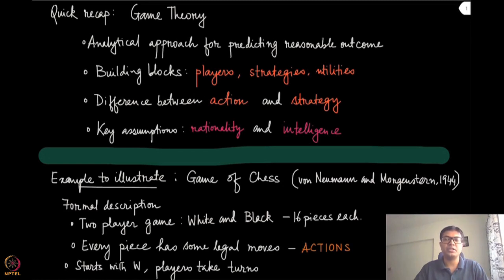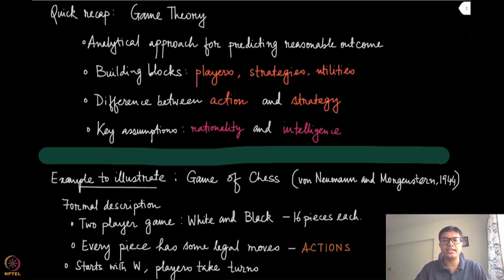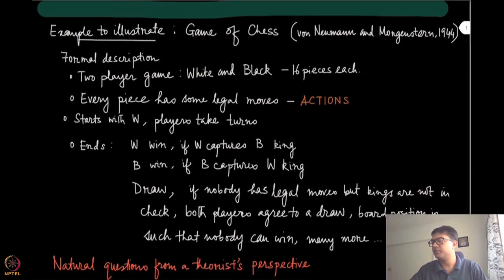The building blocks were the set of players or agents. These players had their strategies and also certain utilities or payoffs. We also made a distinction last time, a little informally, between the terms action and strategy — we will make that more formal this time. In all these cases, we are going to assume that these players are rational and intelligent. The best way to start is to look at a very specific example.